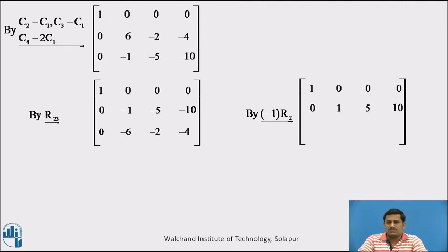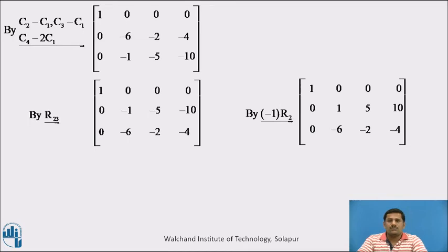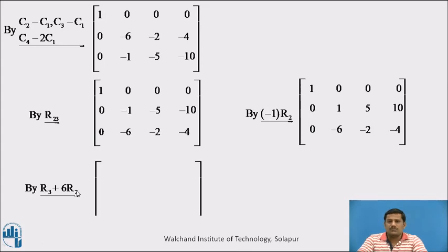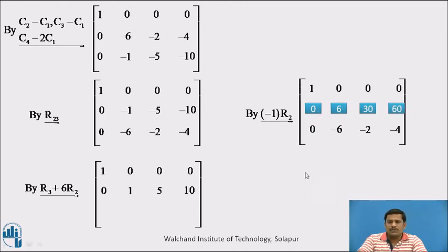We multiply row number 2 by −1 so that −1 is converted to 1. So the first row stays as it is; multiplying row 2 by −1 gives: 0, 1, 5, 10; and the third row stays as it is. Now pause the video and write down a row transformation to reduce −6 to zero using row number 2, and calculate the corresponding row. The row transformation to reduce −6 to zero with the help of row 2 is R3 + 6·R2. Row 1 and row 2 remain as they are. Multiplying row 2 by 6 and adding: the first two entries are 0, then −2+30=28 and −4+60=56.